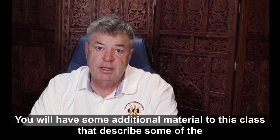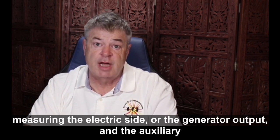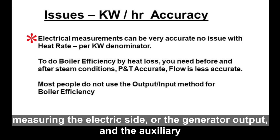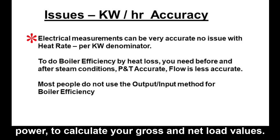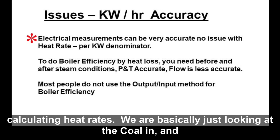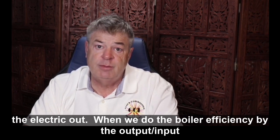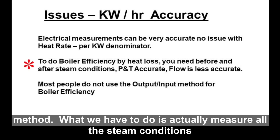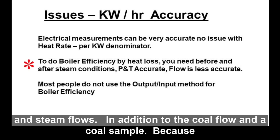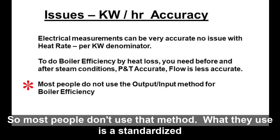There are generally no issues with measuring the electric side — the generator output and auxiliary power to calculate gross and net load values. This is the input-output method for calculating heat rate: coal in and electric out. When we do boiler efficiency by the output-input method, we have to measure all steam conditions and steam flows in addition to coal flow and coal sample. Because of inaccuracies associated with flow measurements, we typically don't get consistent numbers using the output-input method, so most people don't use it.